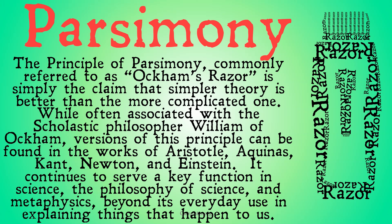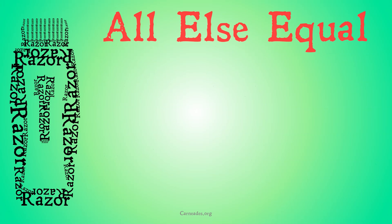While it's often associated with scholastic philosopher William of Occam, versions of this principle can be found in the works of Aristotle, Aquinas, Kant, Newton, and Einstein. It continues to serve a key function in science, the philosophy of science, and metaphysics, beyond its everyday use in explaining things that happen to us.